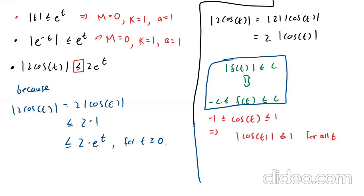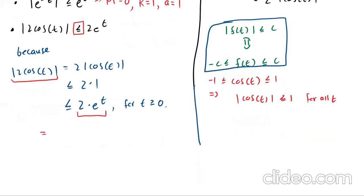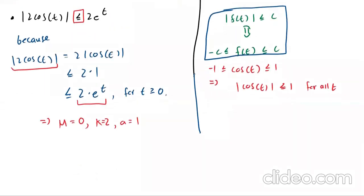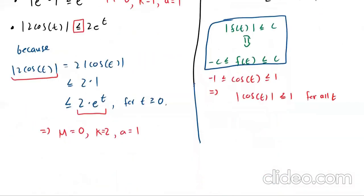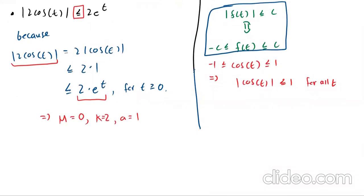That's usually how you prove these things — kind of like how you would prove a trig identity. You start with the left-hand side and do a series of inequalities until you get something with the right form on the right-hand side. What are our constants in this case? This works for all t greater than or equal to zero, so m equals zero. k is two, and a is one. That is how you would usually show that a function is of exponential order: start with the absolute value on the left-hand side, do a bunch of inequalities, identify your m, k, and a, and by definition you have shown that your function is of exponential order — meaning it grows at most as fast as a constant times an exponential.